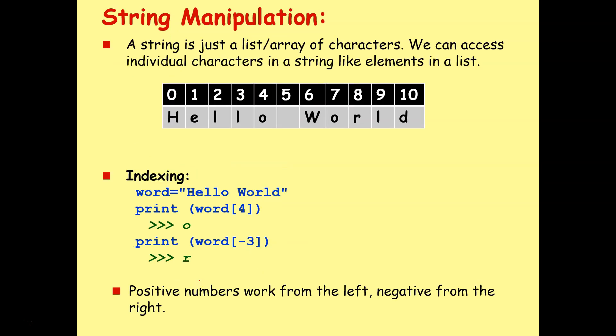So again, basics, a string is just a list or an array of characters. We can access individual characters in a string, just like elements in a regular list. So again, we've got our phrase hello world, and you can see here it has 11 characters indexed from 0 to 10. So this is important, guys. The index position always starts at 0. We count from 0 in Python. So H is 0, E is 1, etc., and that means the 11th character is position 10, which is D.